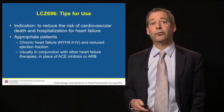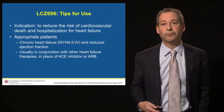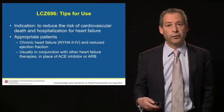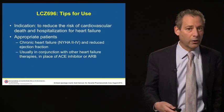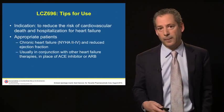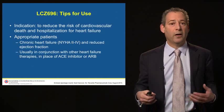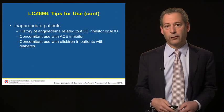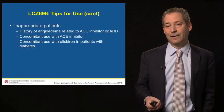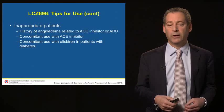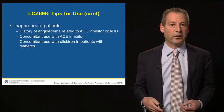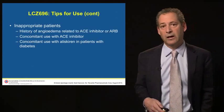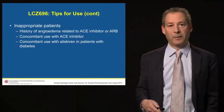A number of tips for use of LCZ-696 are worth discussing. The drug is indicated to reduce the risk of cardiovascular death and hospitalization for heart failure. Appropriate patients include those with chronic heart failure, New York Heart Association Class II to IV, and reduced ejection fraction. We use this drug in combination with other heart failure therapies in place of an ACE inhibitor or ARB. This drug is not to be used together with an ACE inhibitor or ARB — it already contains an angiotensin receptor blocker, and combining it with an ACE inhibitor would increase the risk of angioedema. It should not be used in patients with a history of angioedema related to ACE inhibitor or ARB use, and should not be used concomitantly with the renin inhibitor aliskiren, especially in patients with diabetes.